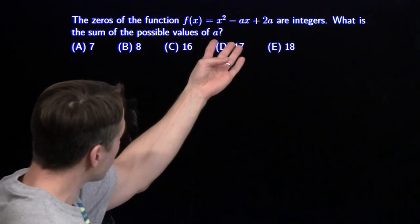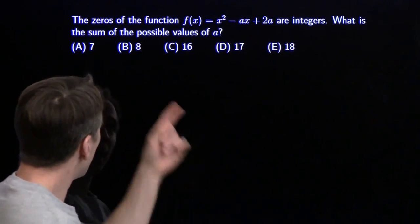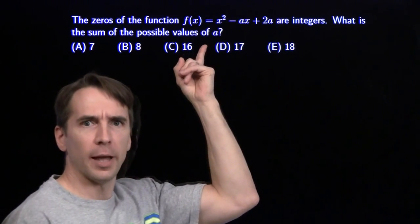We're told that the zeros of this quadratic function are integers, and we want to find the sum of all possible values of a.